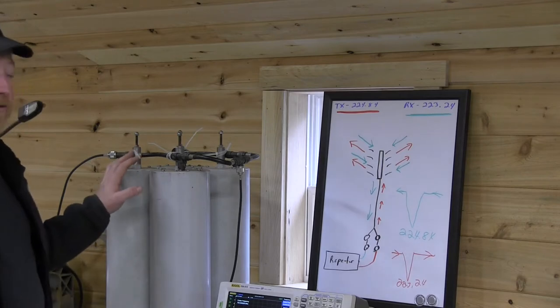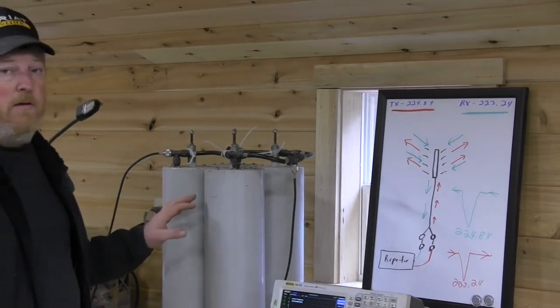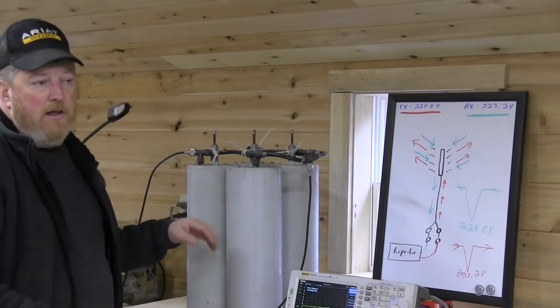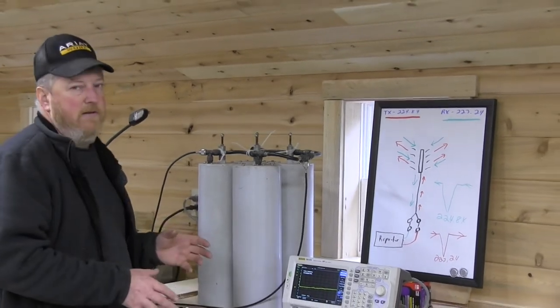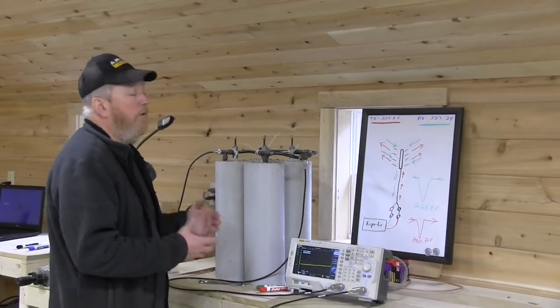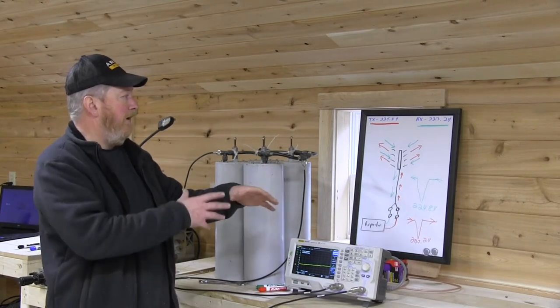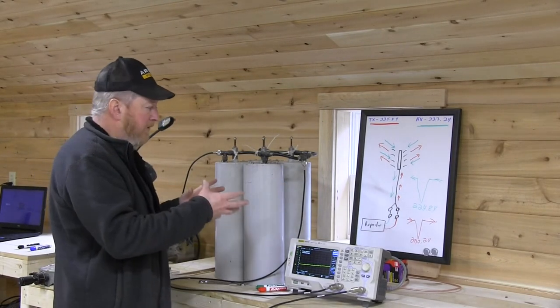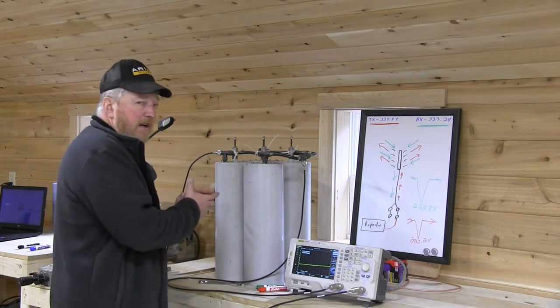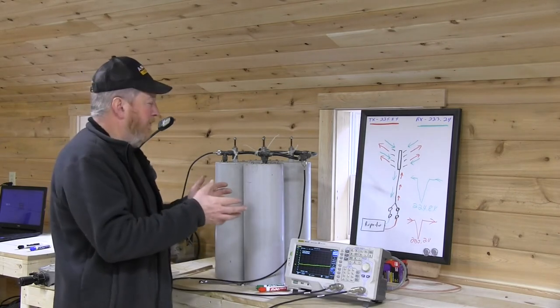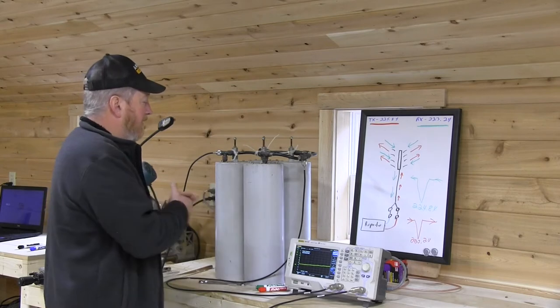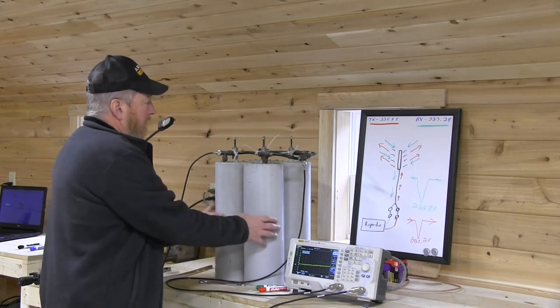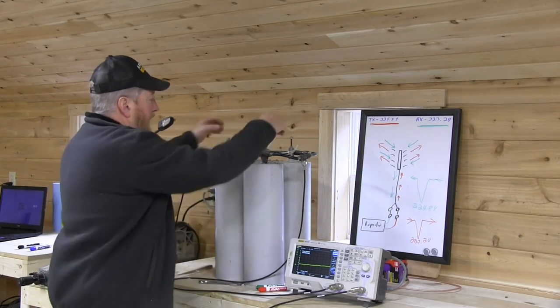As we move into the actual duplexers, these can look different depending on what brand, what frequency you are. On 220 megahertz we have a big spread so we can get away with four of these. On 440 we have a big spread. On two meters it's a lot narrower spread so we usually have six of these. These two here are the low pass and the back two are the high pass.